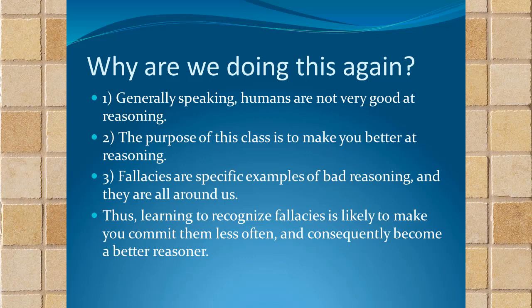Second, the whole point of this class is to make you better at reasoning. Fallacies are specific examples of bad reasoning and they're everywhere — in us and in other people. So these three reasons lead to the conclusion that learning to recognize fallacies is likely to make you commit them less often and become a better reasoner. The point of the class isn't to make you perfect — we're always going to be somewhat emotional, biased, and use confirmation bias. The best we can hope for is to minimize our errors in reasoning and become better reasoners incrementally.